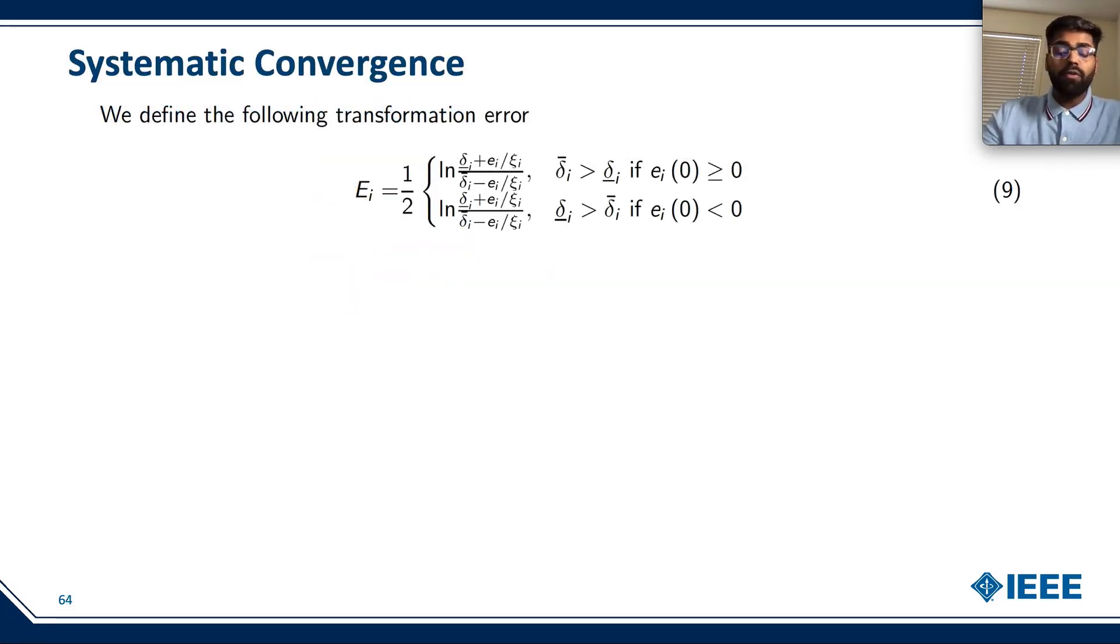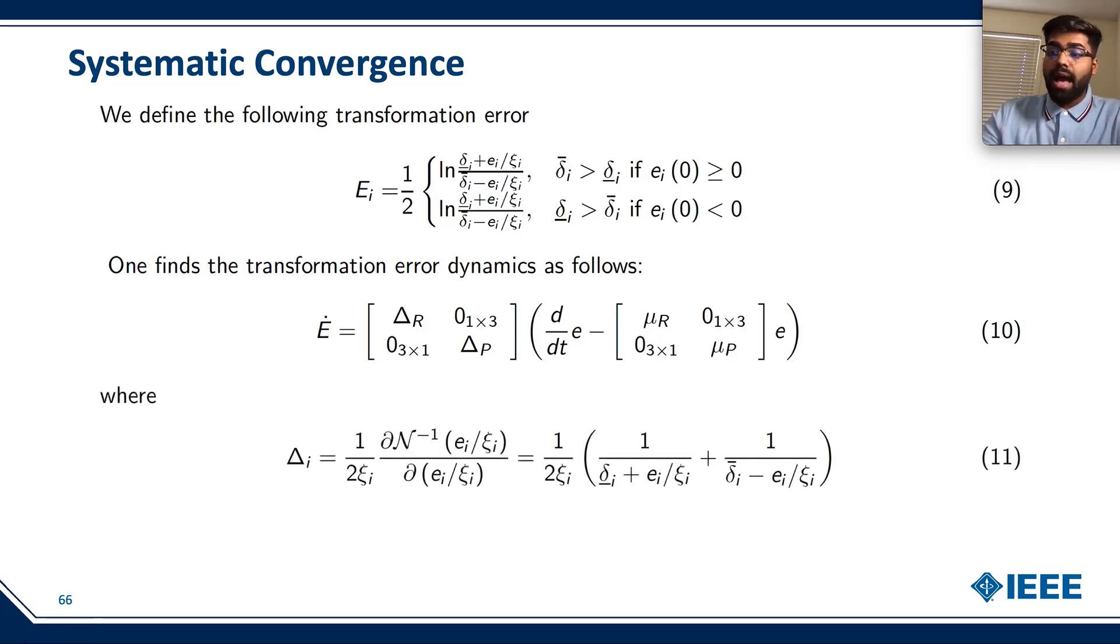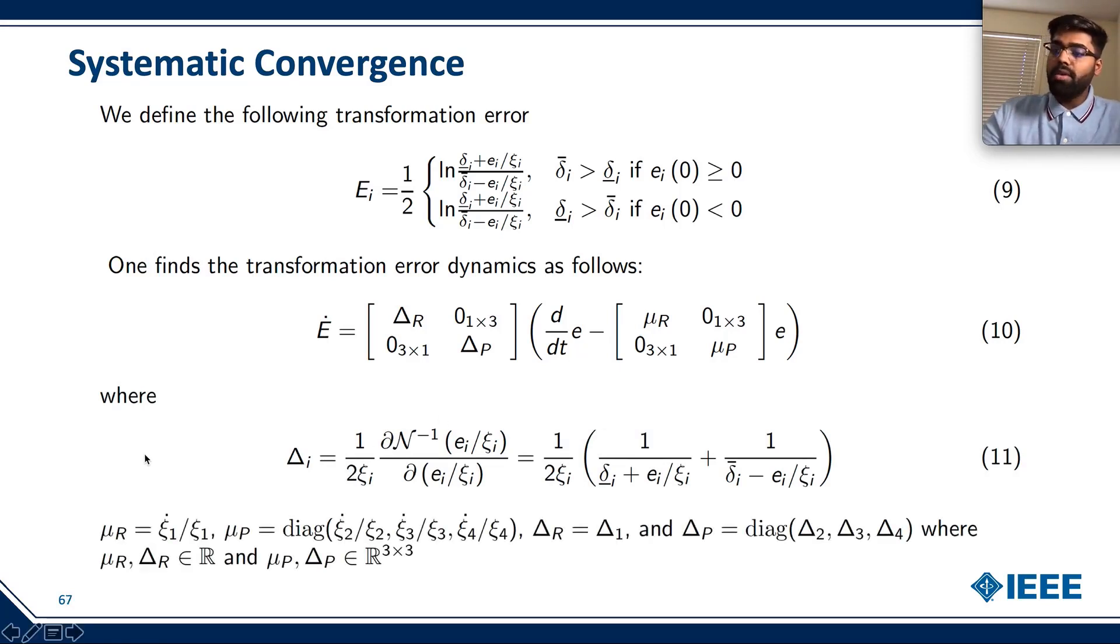We define the following transformation error E i. And here is the dynamics of the transformation error. Where delta i equals to this equation. And mu r, mu p, delta r, and delta p are defined as follows.